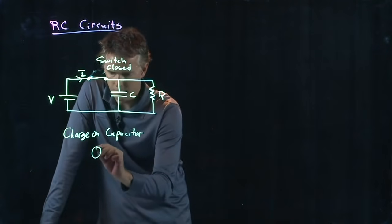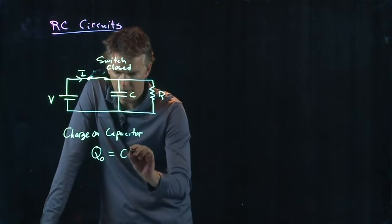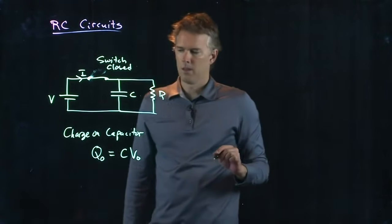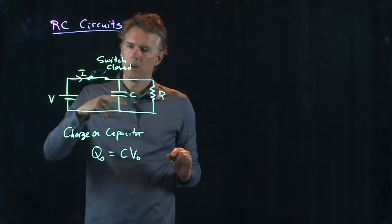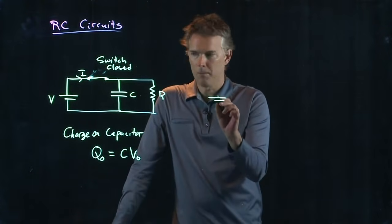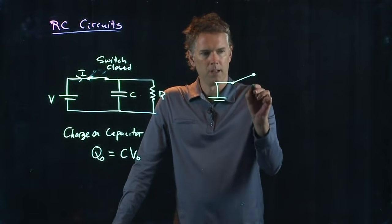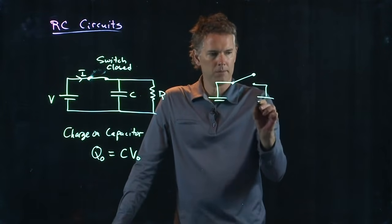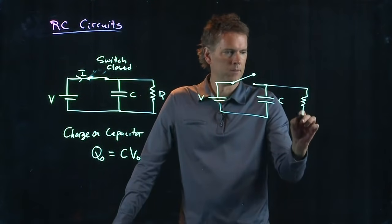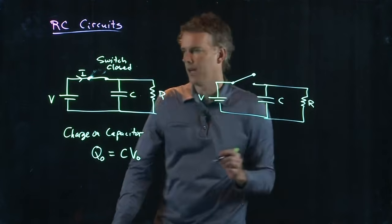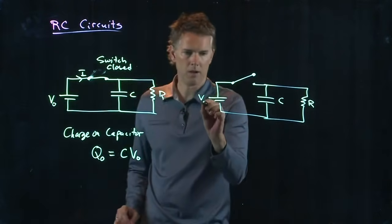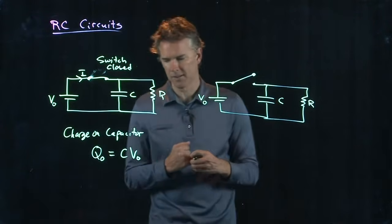Switch is closed. Current starts to flow. And we can think about the charge on the capacitor. What is the charge on the capacitor? Well, we know that. Some Q naught is equal to C times V naught. And I guess we call this initial voltage V naught on the battery. And you'll see why we did that in a second.